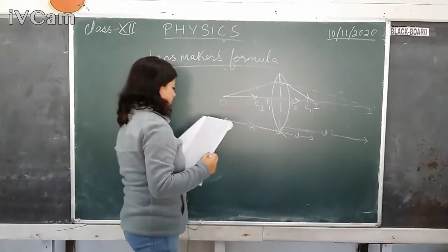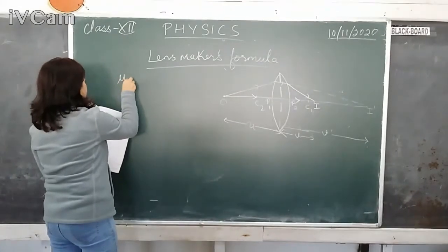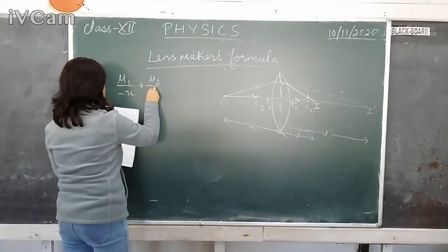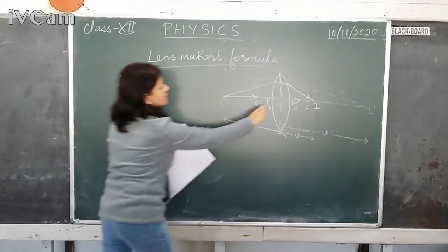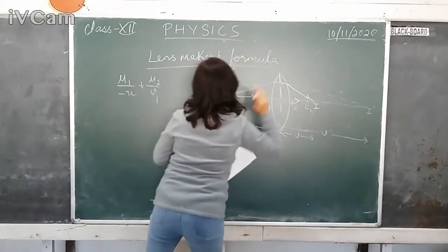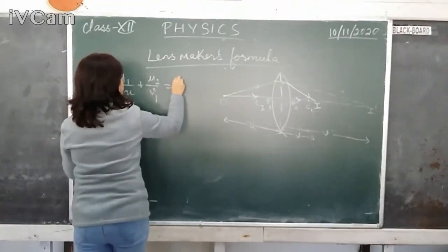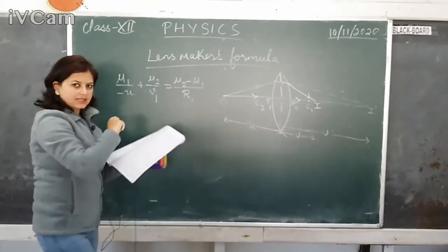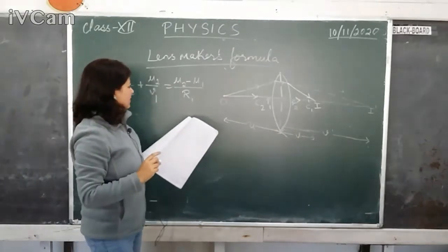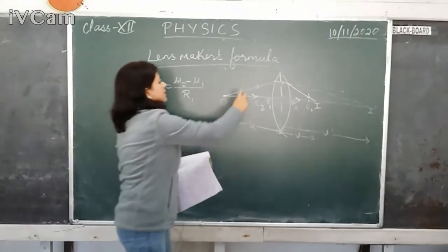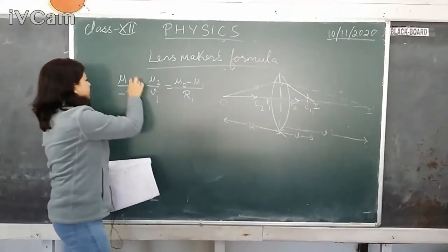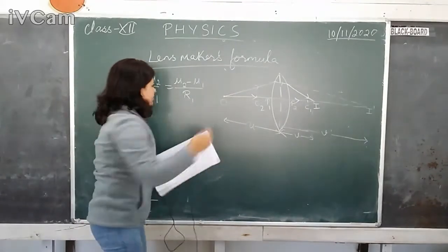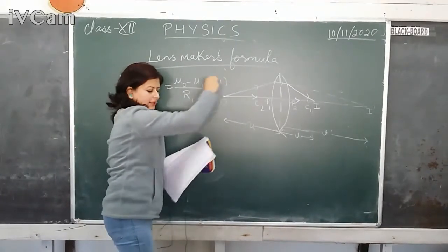Using the formula mu1 by V1 minus mu2 by U equals (mu2 minus mu1) divided by R1 — assuming the second surface is absent, refraction is from rarer to denser medium, so the first medium is mu1. This gives us equation 1. However, the lens is not continuous, so an image is actually formed at I dash.